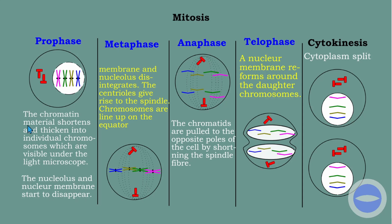In prophase, the chromatin material shortens and thickens into individual chromosomes, which become visible under the light microscope. Most of the time DNA spends its time as a chromatin network, but as we approach cell division, this DNA starts to condense and becomes visible. The nucleolus and the nuclear membrane also start to disappear during prophase.